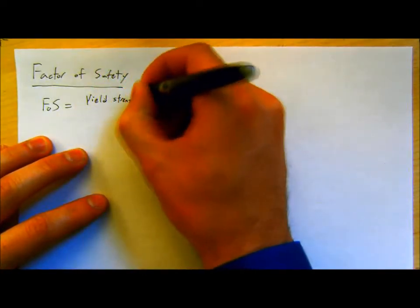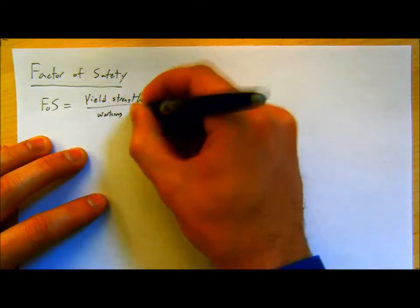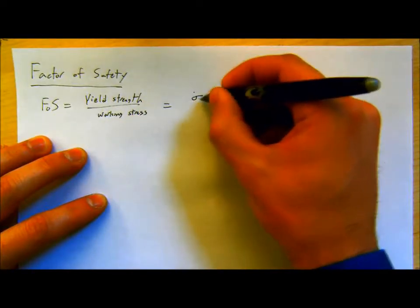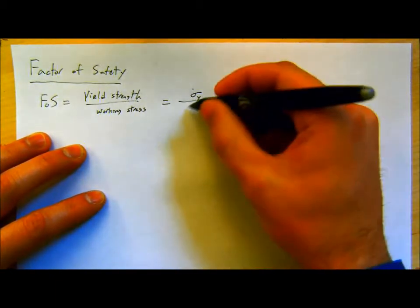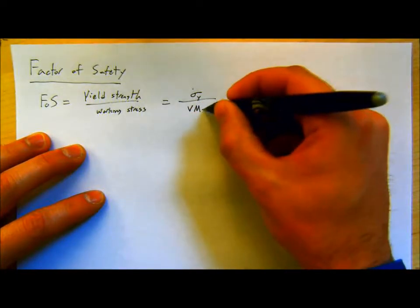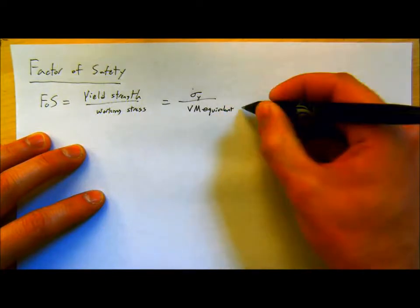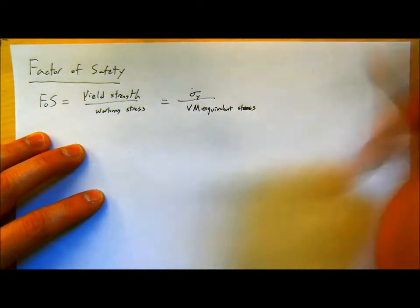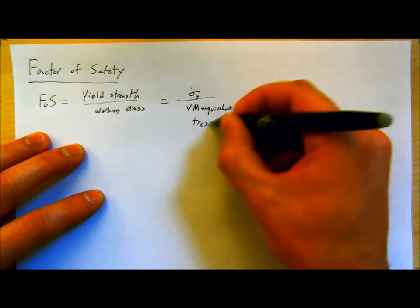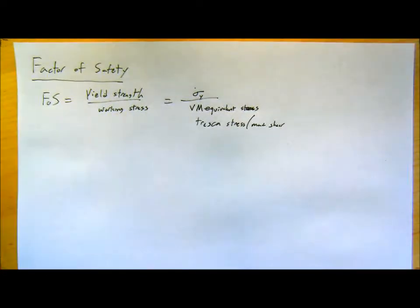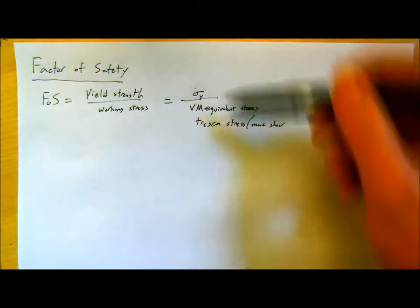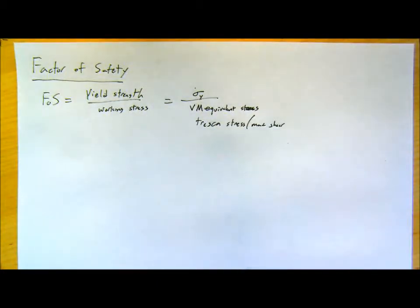For most engineering materials, especially metals, you'll report this as your equivalent stress — your Von Mises equivalent stress. You could also report it using your Tresca stress or max shear, or in terms of your principal stresses. It all depends on what failure criterion you're using. Basically it's that ratio between where your material is going to fail and how far along to failure your material is.